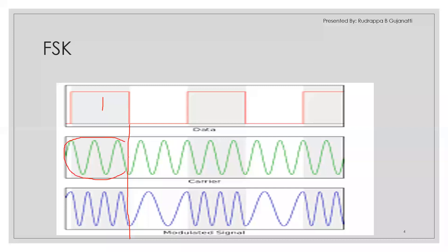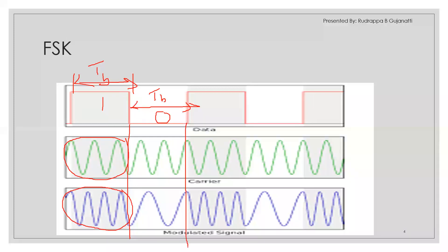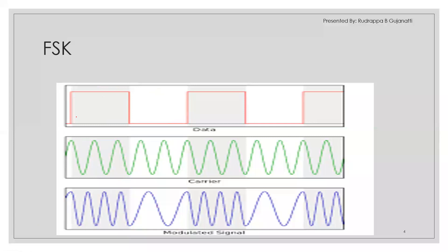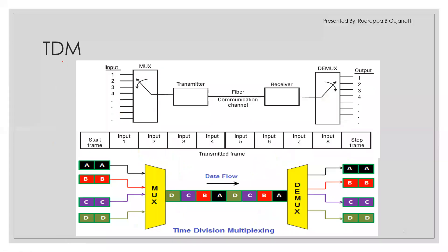Looking at the FSK waveform: during a bit interval where data is one, a higher carrier frequency is presented. When data is zero, the carrier is not suppressed but its frequency is changed — the carrier frequency is reduced compared to the one-bit case. So when data is one, a high-frequency signal is transmitted; when it is zero, the frequency is reduced relative to the original carrier. This is how FSK works.